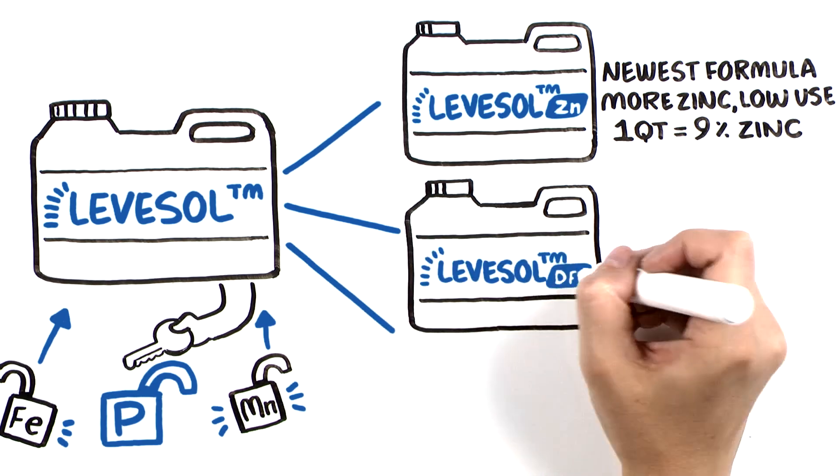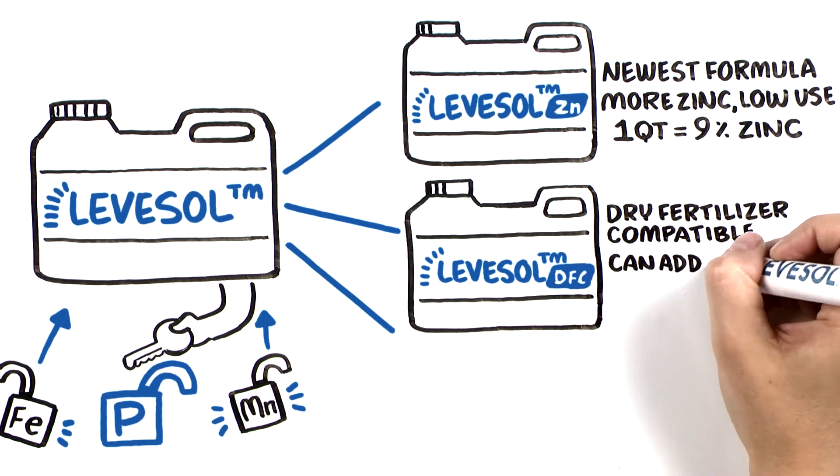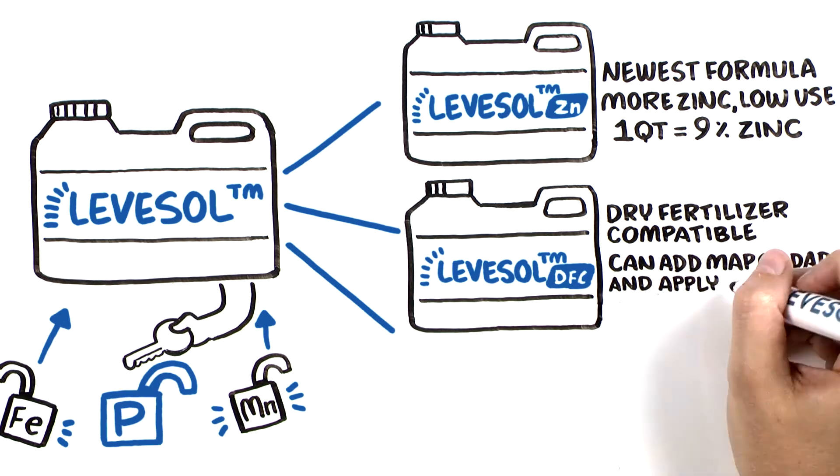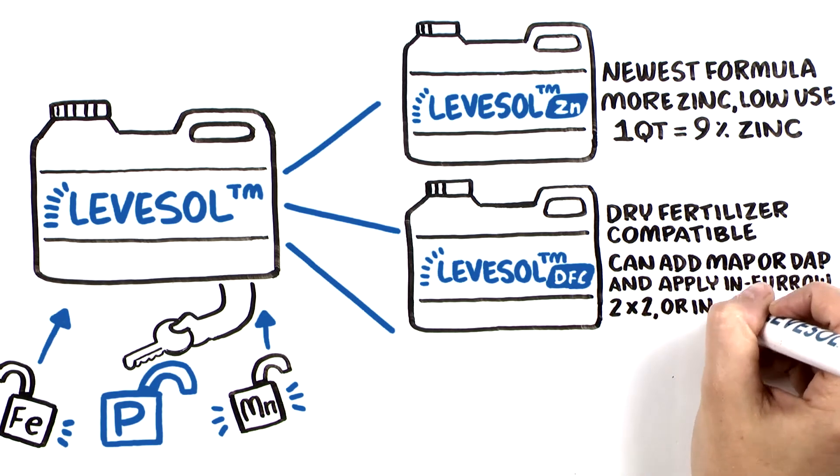Levisol DFC is a dry fertilizer compatible formula that can be impregnated with MAP or DAP and applied in-furrow two by two or in a band.